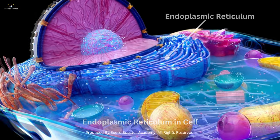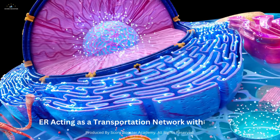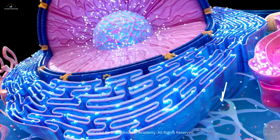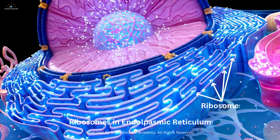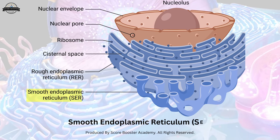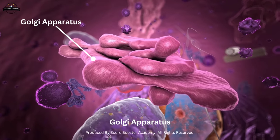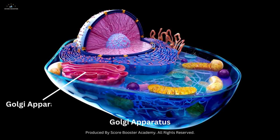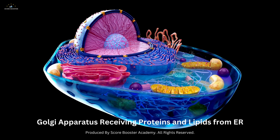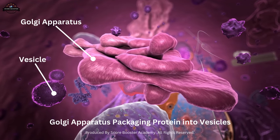The endoplasmic reticulum acts as a transportation network within the cell, facilitating the movement of proteins and lipids. It consists of rough endoplasmic reticulum studded with ribosomes that synthesize proteins, and smooth endoplasmic reticulum involved in lipid metabolism and detoxification processes. The Golgi apparatus serves as a processing and packaging center. It receives proteins and lipids from the ER, modifies them, and packages them into vesicles for transport to various destinations within or outside the cell.